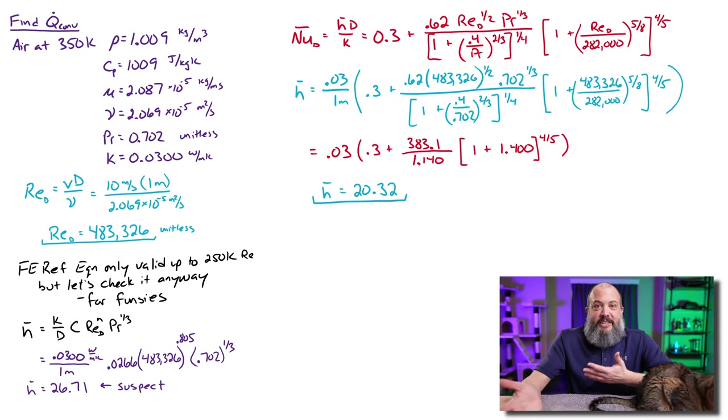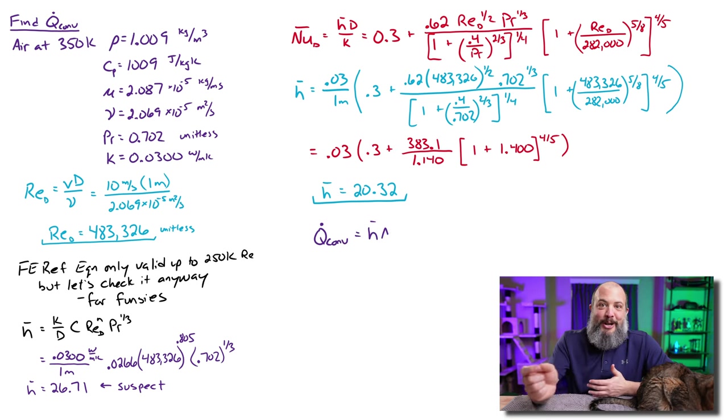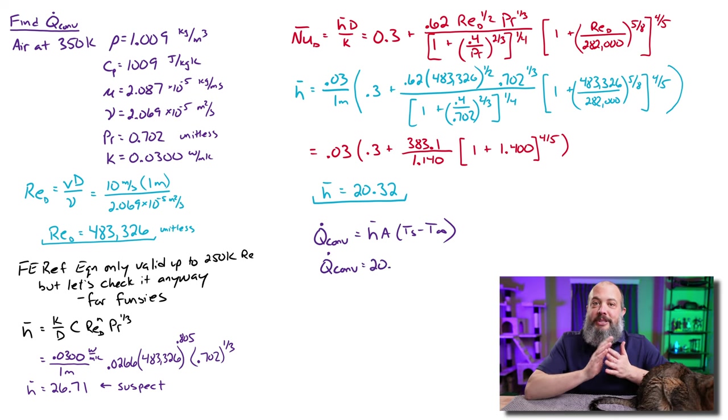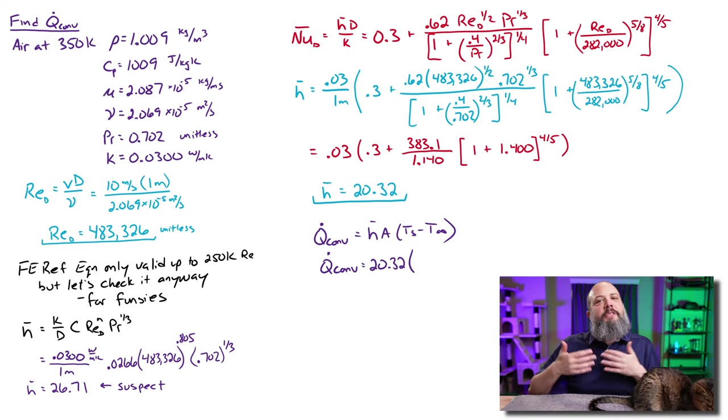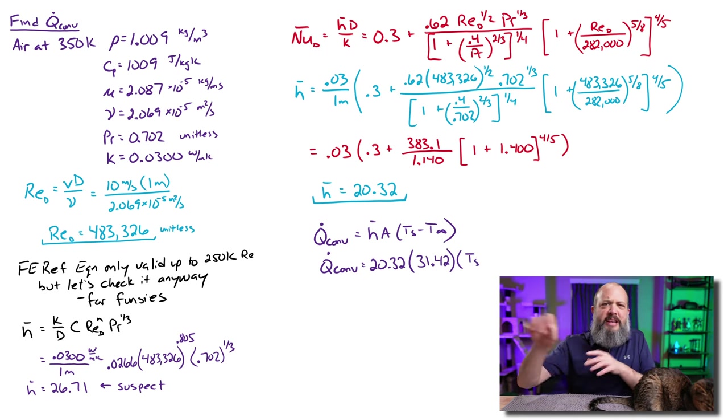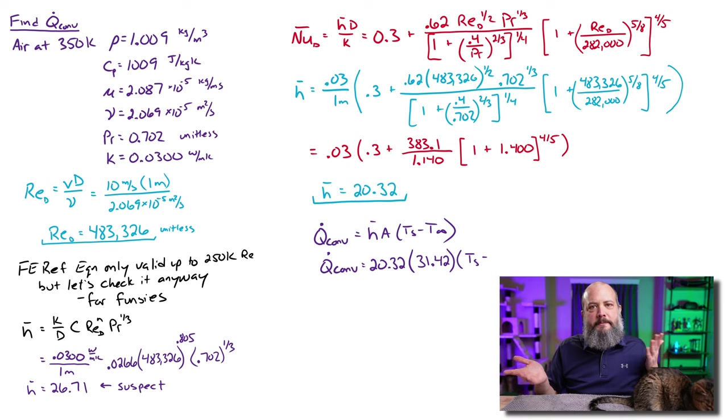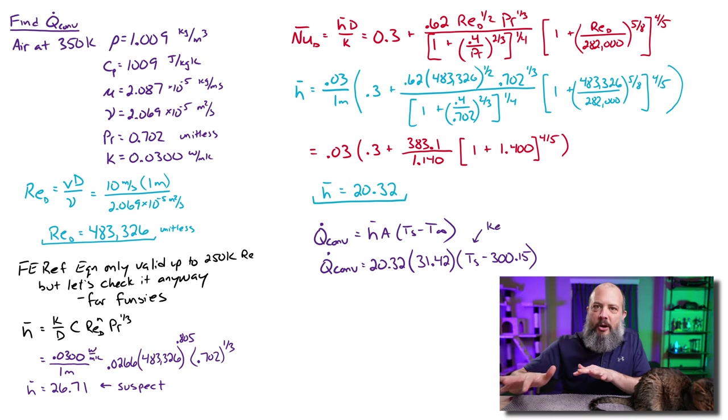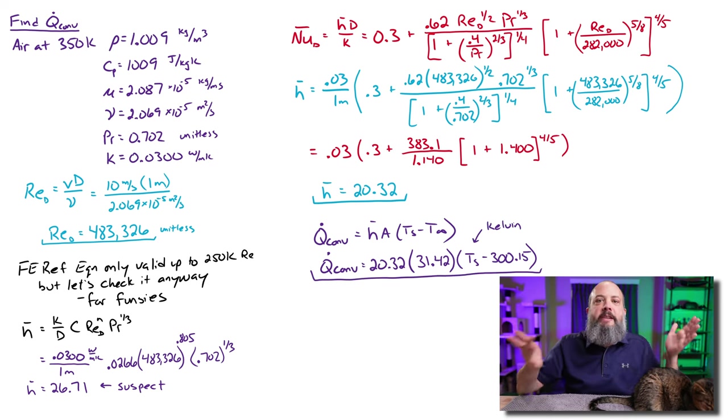So then the actual convection equation is just regular h A delta t, this new 20.32, the surface area, the entire surface area, 31.42, times the change in temperature. It's often safe to leave temperatures in Celsius when you're doing a delta t because if you just add 273 to both of them, it cancels out. But since we had to leave the radiation temperatures in Kelvin, these temperatures also have to be in Kelvin so that it's the same number in different parts of the equation.